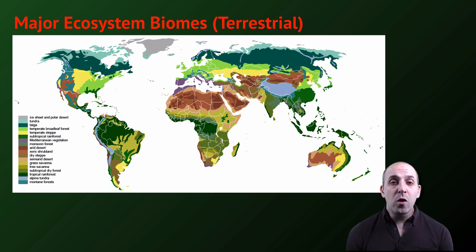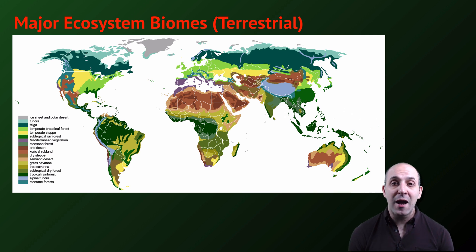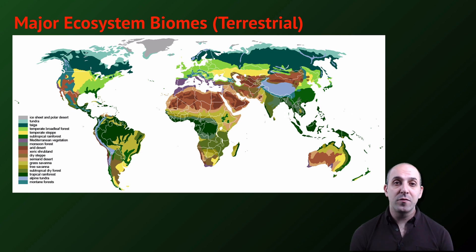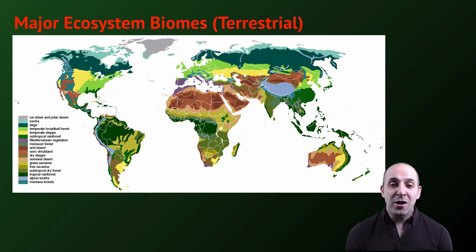This is a tour of the major terrestrial ecosystem biomes. A biome is just a large group of related ecosystems. Terrestrial biomes on the planet are basically determined by local conditions — functionally temperature, the amount of direct sunlight that the area receives over the course of the year, and the amount of precipitation, which is determined both by latitude and by local geologic features such as mountain ranges.